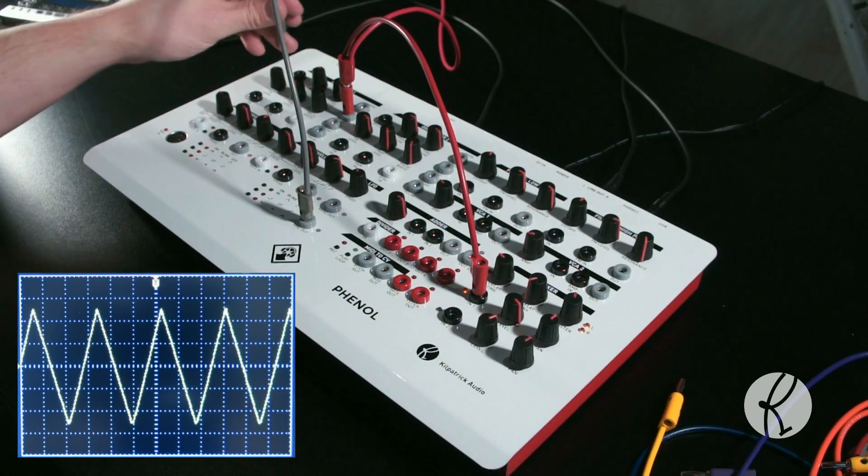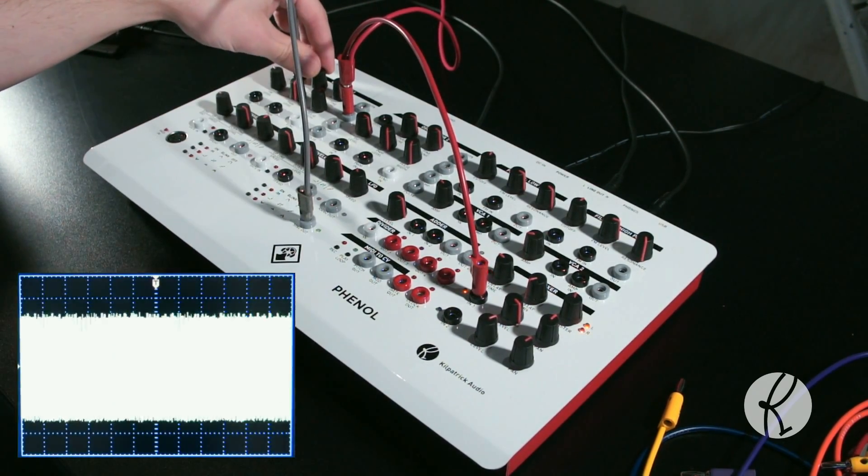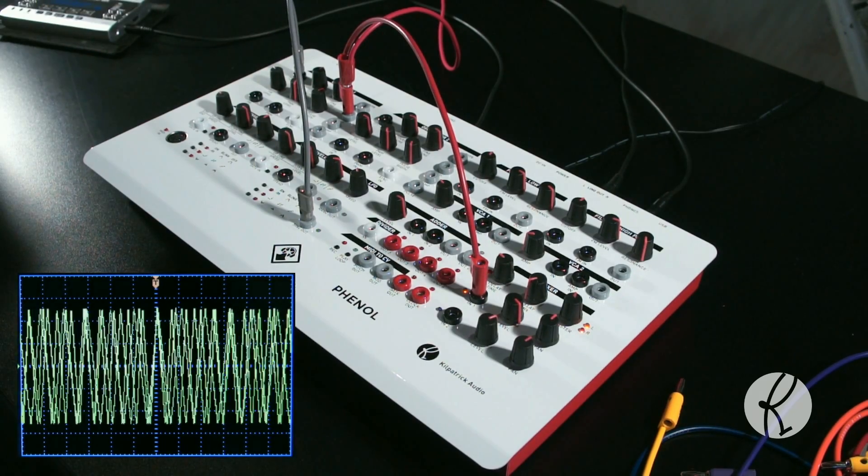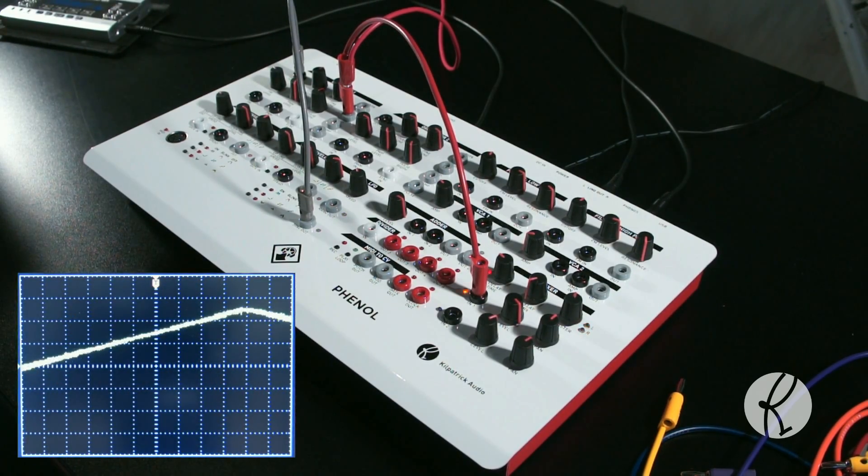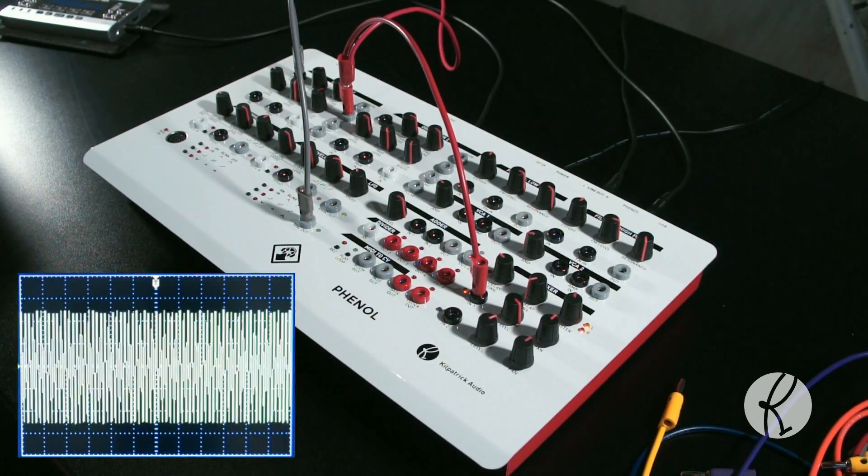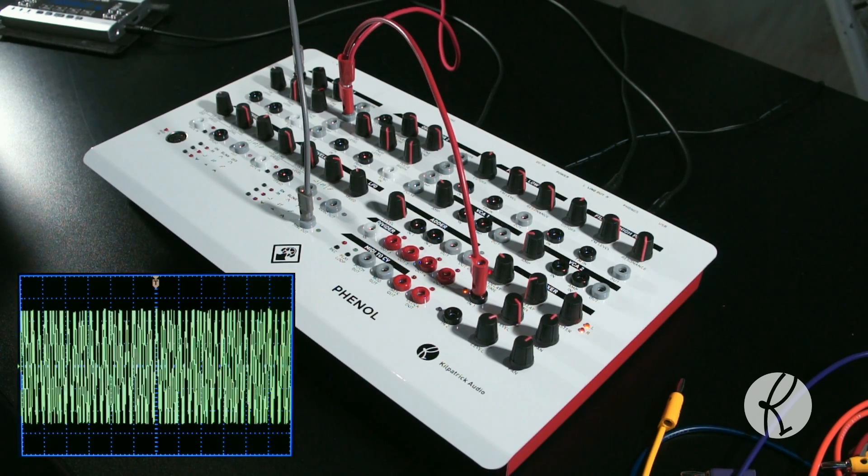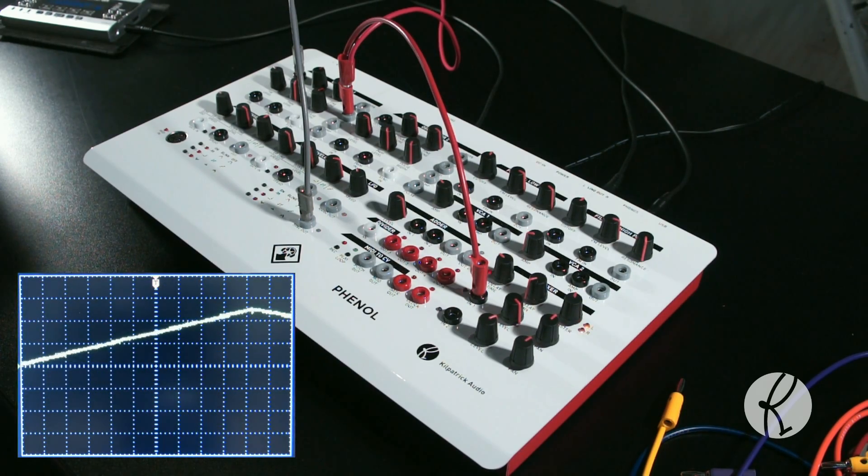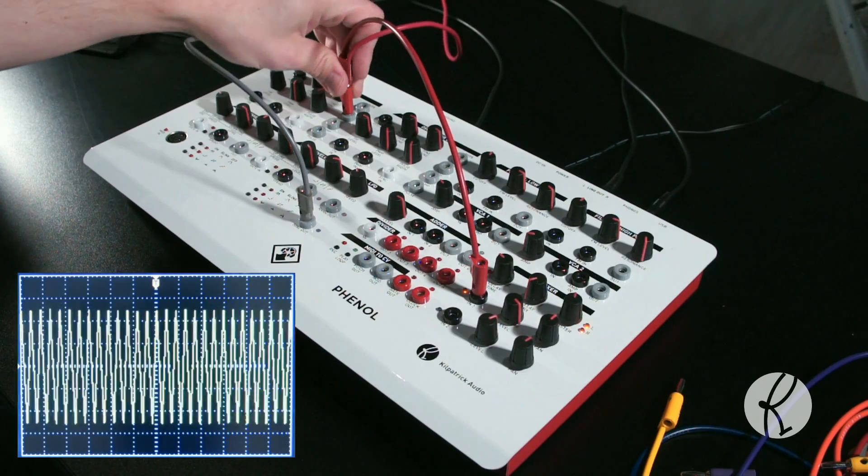You can also control the pitch of the oscillator with a voltage, either using the pitch in for a one volt per octave calibrated input, or with the FM in, which allows you to vary the amount of pitch variation based on the input voltage.